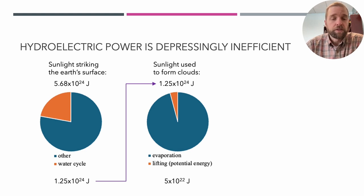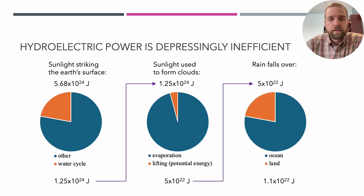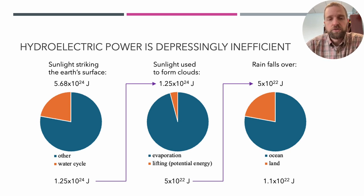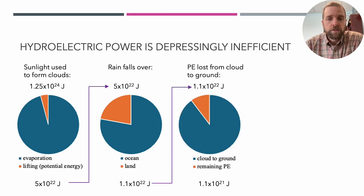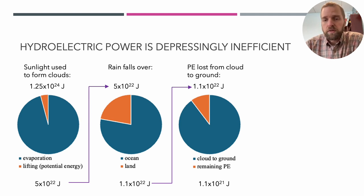The potential energy is only a small fraction of the sunlight used to drive the water cycle. Since most rain falls over the ocean, we lose all that potential energy, leaving about 10²² joules per year available for hydroelectric power. Taking that further, most energy is lost when rain falls from the cloud to the ground — ballparking a 10,000-foot cloud raining to 1,000-foot elevation, we're left with about 1.1 × 10²¹ joules.